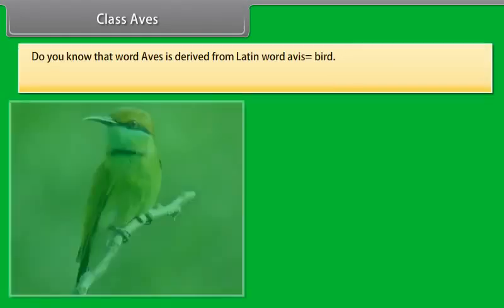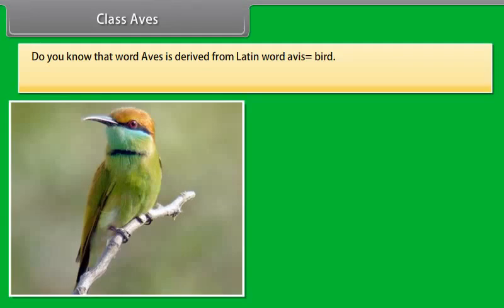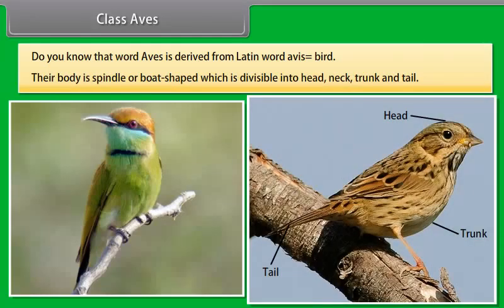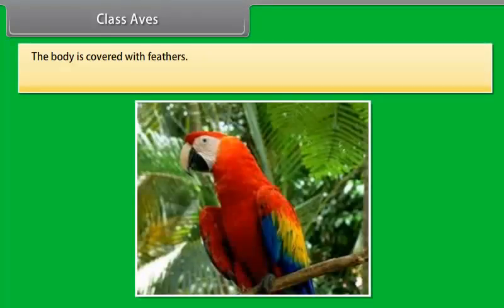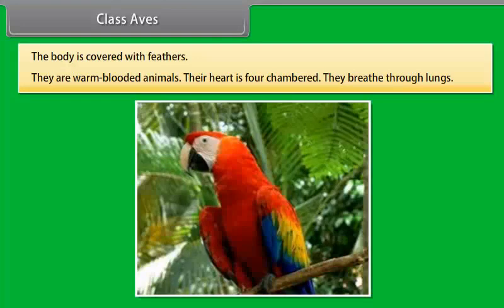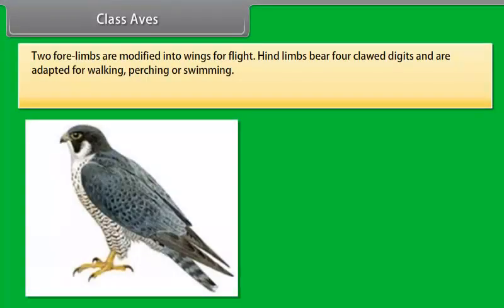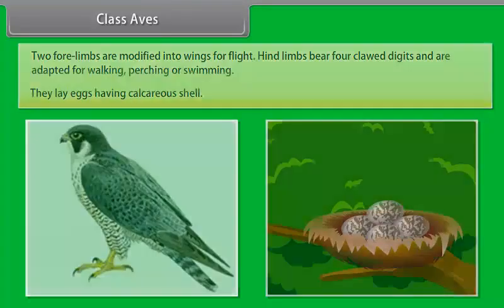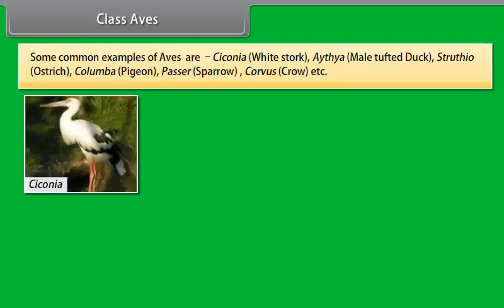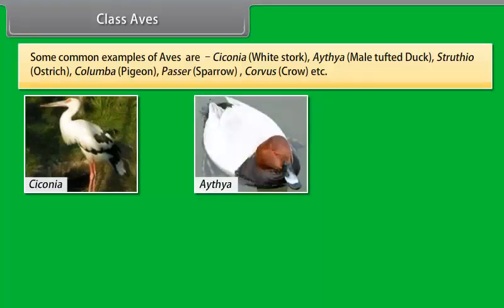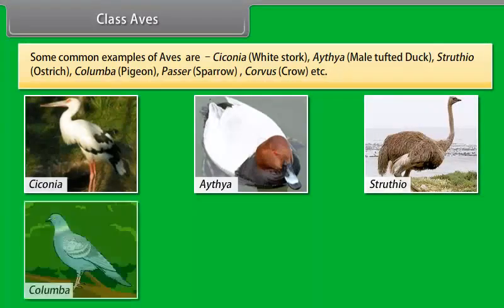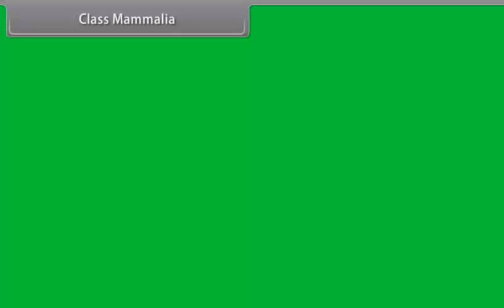Class Aves. The word Aves is derived from Latin word 'avis' meaning bird. Their body is spindle or boat-shaped, divisible into head, neck, trunk, and tail. The body is covered with feathers. They are warm-blooded animals. Their heart is four-chambered. They breathe through lungs. Two forelimbs are modified into wings for flight. Hind limbs bear four clawed digits and are adapted for walking, perching, or swimming. They lay eggs having a calcareous shell. Common examples are Ciconia (White Stork), Aythya (Tufted Duck), Struthio (Ostrich), Columba (Pigeon), Passer (Sparrow), and Corvus (Crow).